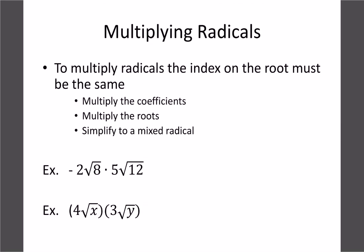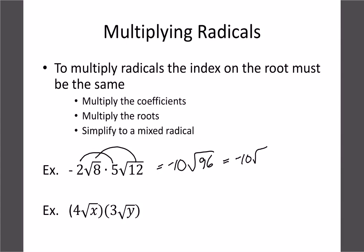With multiplying, the key rules are: multiply the outside coefficients (the regular whole numbers — if there's nothing there, think of it as 1), then multiply the roots. For this first example, 5 times negative 2 is negative 10, and 8 times 12 is 96. Then simplify as much as possible — 96 breaks into 16 and 6, and root 16 is 4, so the final answer is negative 40 root 6.